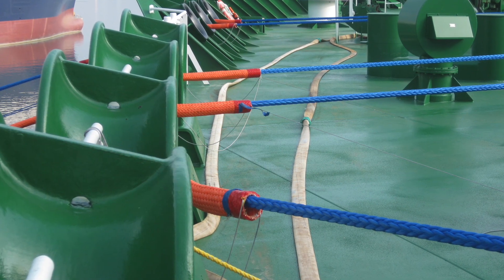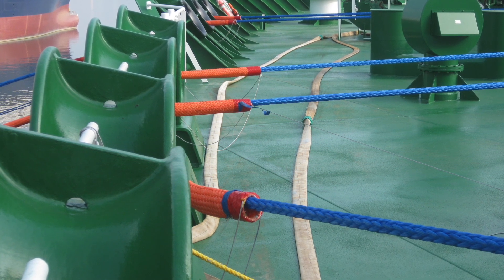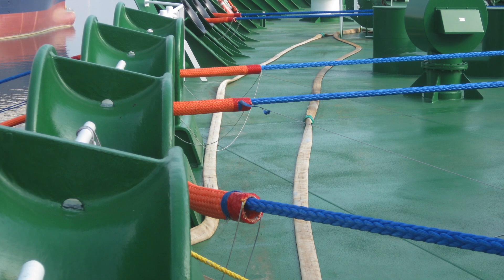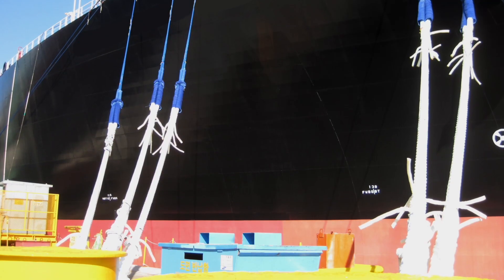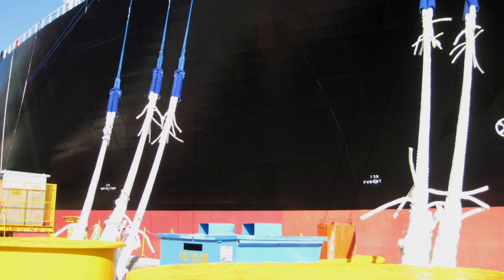Higher modulus fibers like HMPE or ARAMID are commonly used as main lines. While these lower elongating ropes do store less energy, they are often connected to high elongation tails, which increases energy in the system.